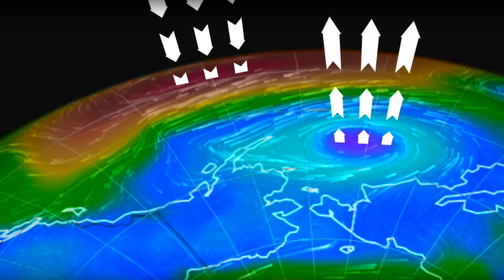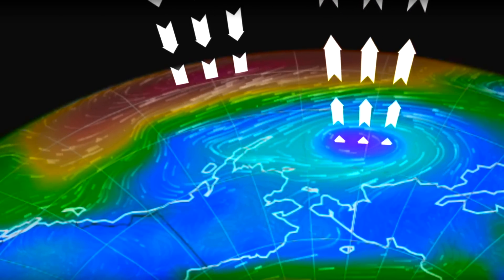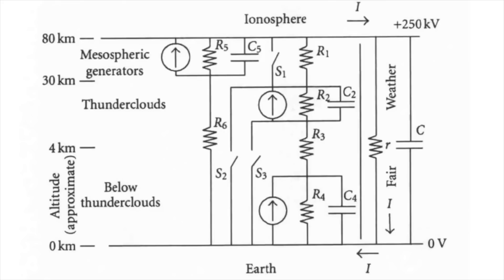So what is the effect of these Forbush decreases — these CME impacts to our planet — on the global electric circuit? That was the focus of this morning's article: the CME impact effect on the atmospheric electricity. To review, the circuit goes from the ground up to the ionosphere, with flows in both directions, up and down. It comes down in fair weather, high pressure, and shoots back up in low-pressure cells. There is a 250,000-volt differential between the ground and the ionosphere.